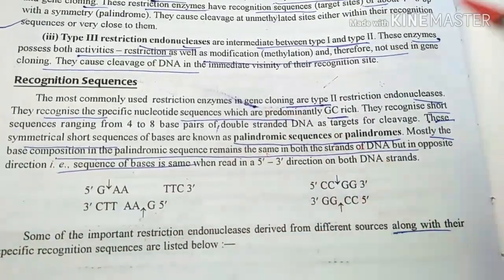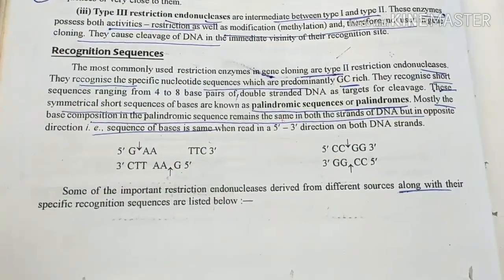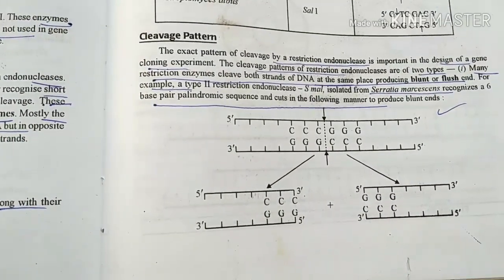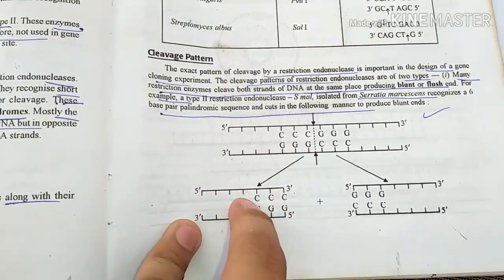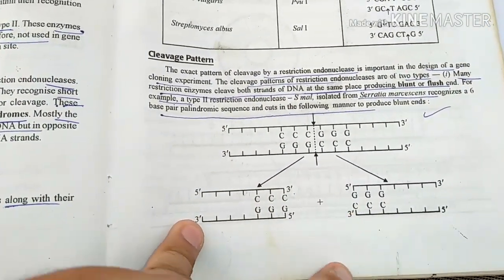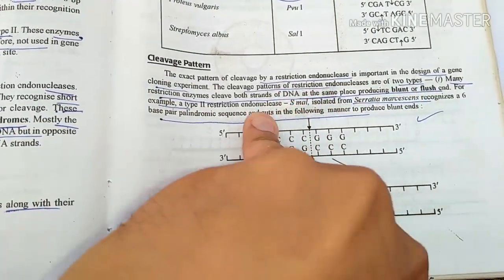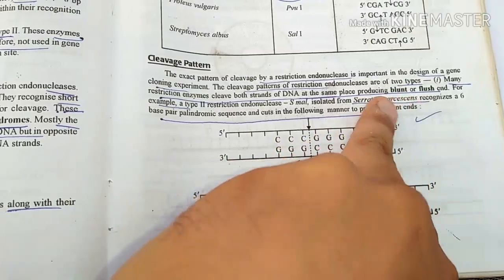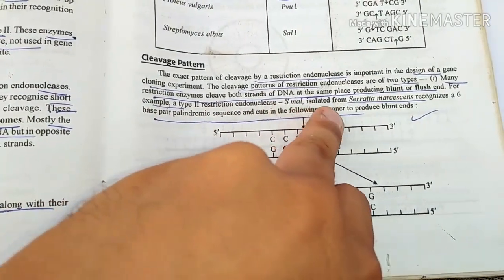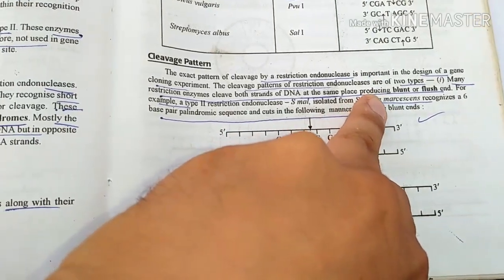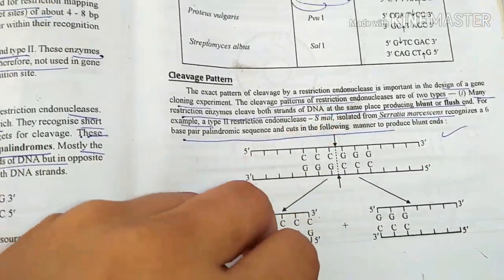The cleavage produces two types of ends: sticky end and blunt end. We can see the pattern of cleavage. Some restriction enzymes produce blunt ends. For example, type 2 restriction endonuclease — Sma1 — isolated from Serratia marcescens, recognizes a six base-pair palindromic sequence and produces a blunt end.